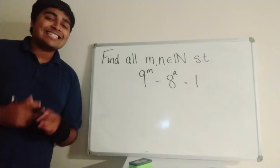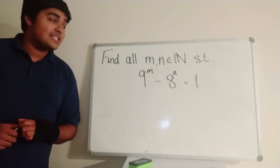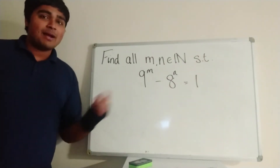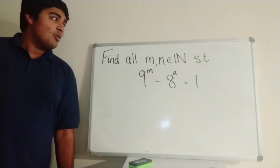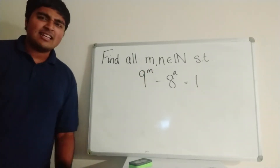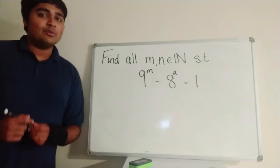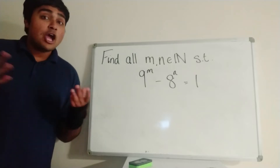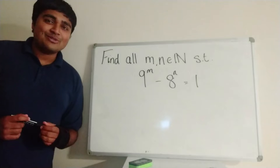Hi, thanks for joining me today. I've got a classic and quick number theory problem for you. We want to find all positive integers m and n such that 9 to the power of m minus 8 to the power of n is equal to 1. If we stare at this for just a second, we'll notice that if we let m and n both equal 1, then we've got 9 minus 8, which equals 1. So certainly m equals n equals 1 is a solution, but we want to know if there are any more. If you want to have a go at this problem, pause the video now — I'm going to jump straight into a solution.